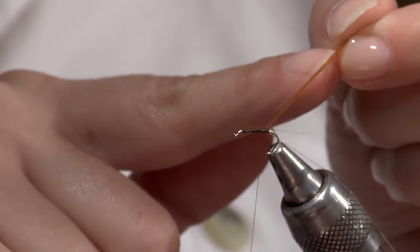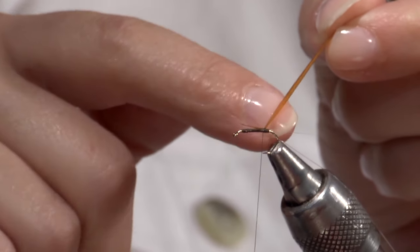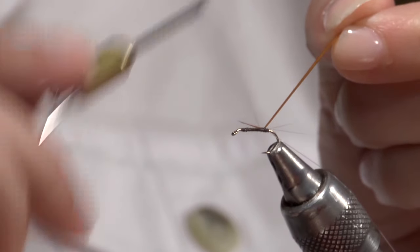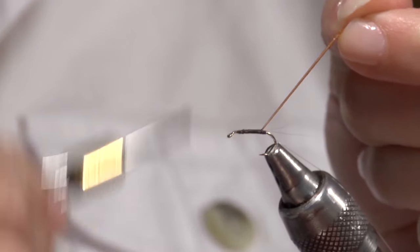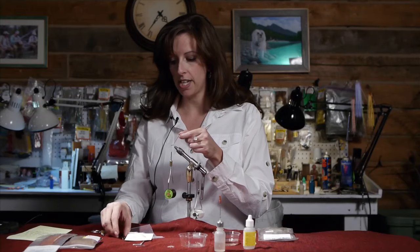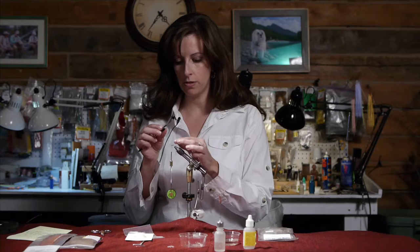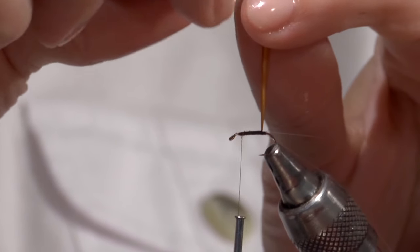And the rust, the seam to come towards me. Run my thread to right behind the eye. I take my hackle pliers and I turn that biot to the right.